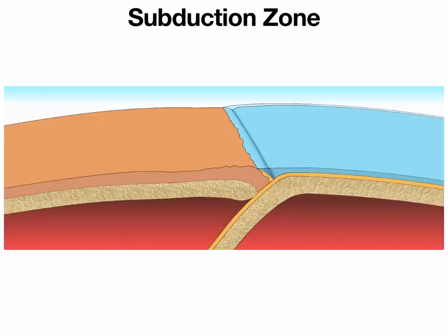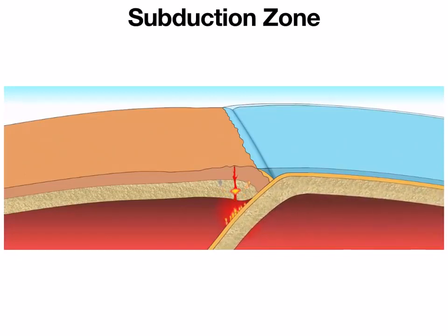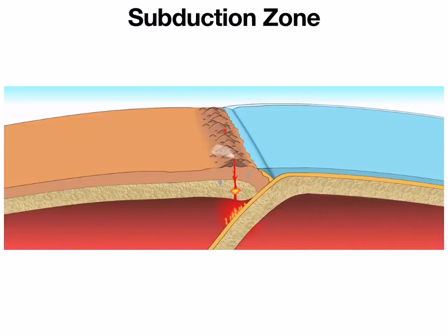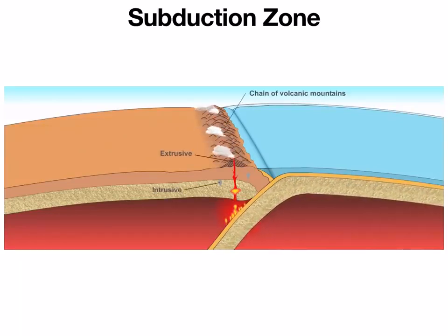The first type we call a subduction zone. This happens when continental crust on the left collides with oceanic crust on the right. The oceanic crust sinks underneath the continental crust because oceanic crust is more dense — it's heavier. When the two collide, the heavier oceanic crust sinks underneath the lighter continental crust. When it sinks, it melts because it's hot down in the asthenosphere, and that melting rock finds cracks and crevices to rise through and ultimately erupts at the surface, forming active volcanoes. Features at subduction zones include a chain of tall mountains and active volcanoes, a deep ocean trench just off the coast, and lots of earthquakes along the subducting plate.